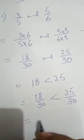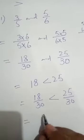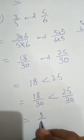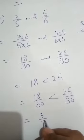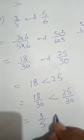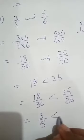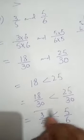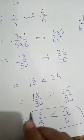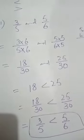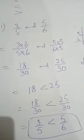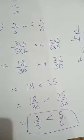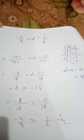Now we write the original question: 3/5 is less than 5/6. It is now clear that 3/5 is less than 5/6.